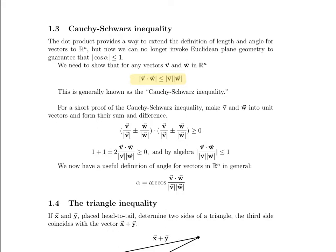By the distributive properties of the dot product, we can expand this expression. If we take unit V and dot it with itself, that gives us the square of its length, which is 1. The same applies to unit W — its length is 1, so the square of its length is also 1. Then we have plus or minus 2 times V dotted with W over the length of V times the length of W. Remember that these are scalars and behave like coefficients. So all we've done is expand using the laws of the dot product.